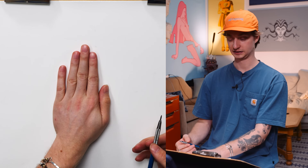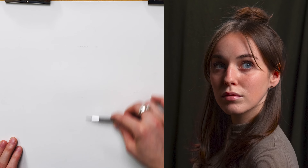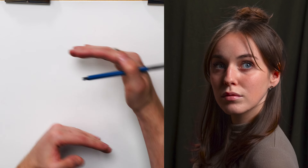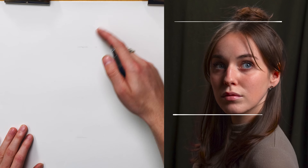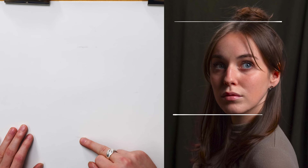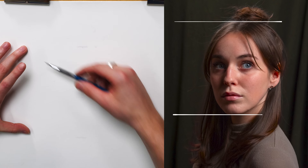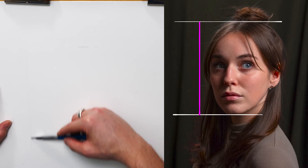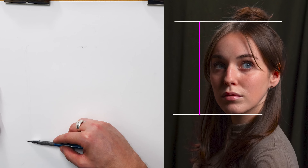To start, I want to find the top and the bottom of the head. The top of the head — we're disregarding the bun — and the bottom of the chin. So we have this distance that we're delineating, and we're going to draw a line just so we can visualize this better.